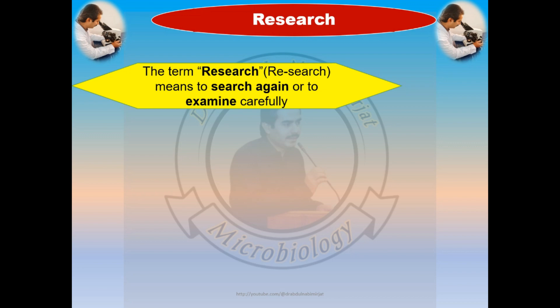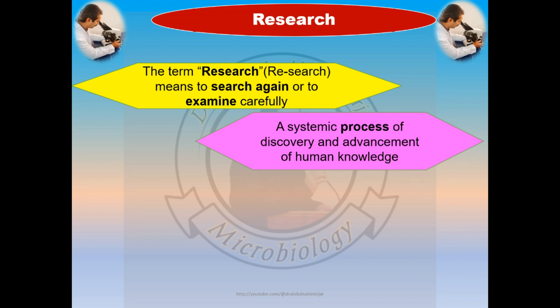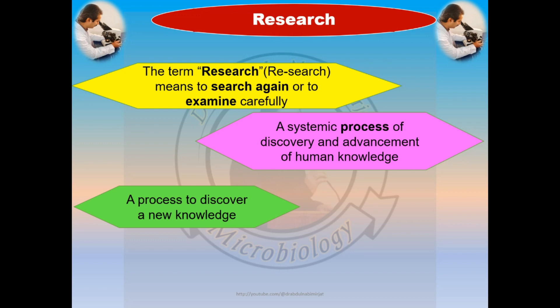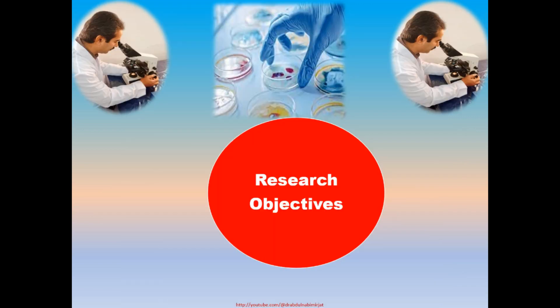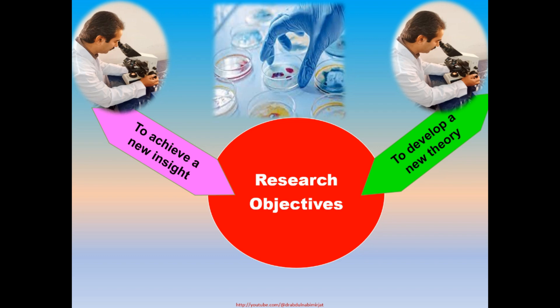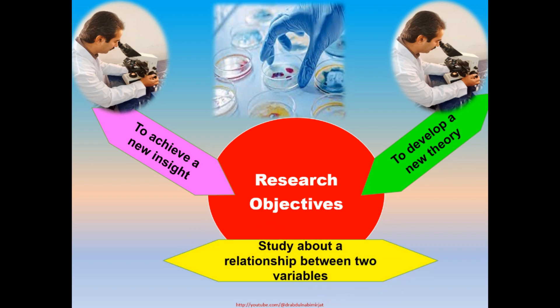To understand research further, we have some more definitions. Research is a systematic process of discovery and advancement of human knowledge, or it is a process to discover new knowledge. Research can be scientific or purposeful, meaning it leads to a fact, a theory, or a principle. The main objectives of research include achieving new insight, developing a new theory, and studying the relationship between two variables.